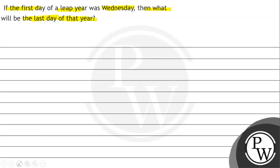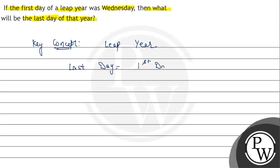We have to find out the last day. Key concept: for a leap year, if we have to find the last day, then last day equals first day plus one odd day.